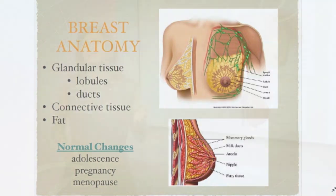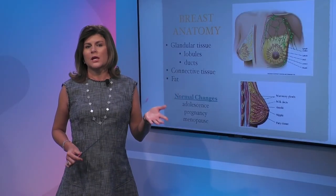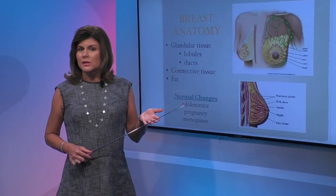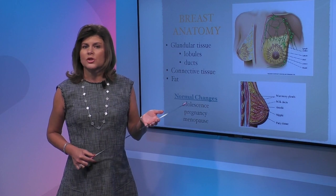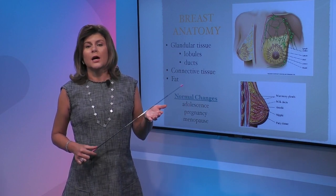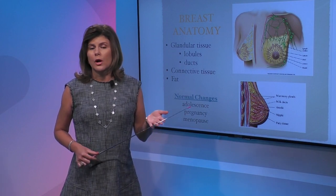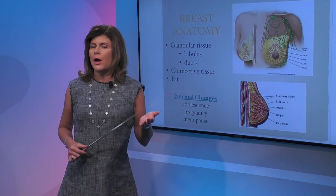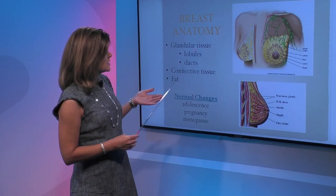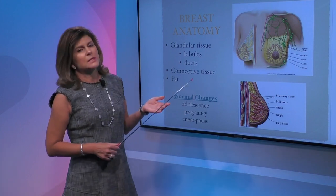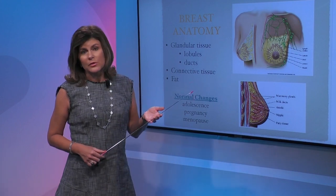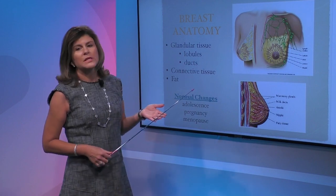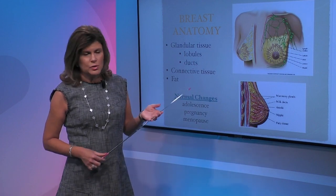I think it's important before we talk about abnormal conditions in the breast, such as breast cancer and benign breast conditions, that we talk about what's normal in the breast. This is a diagram that depicts the anatomy of the breast, and the breast is typically composed of three types of tissues.